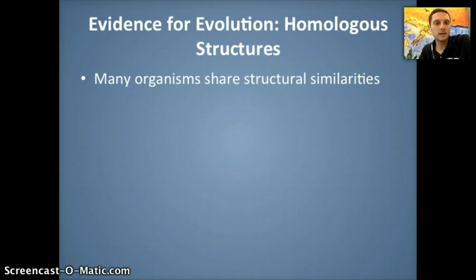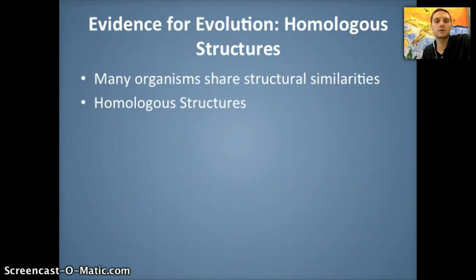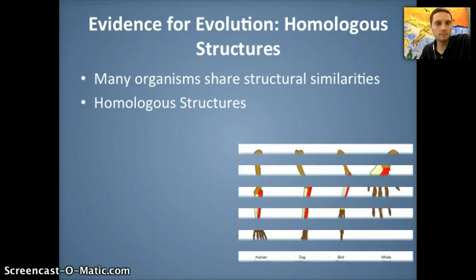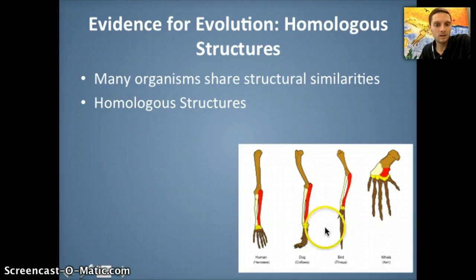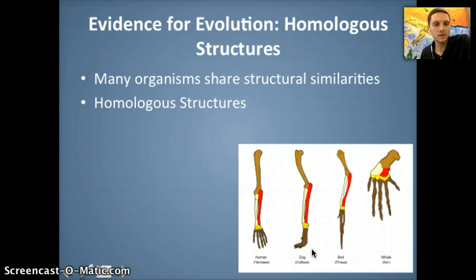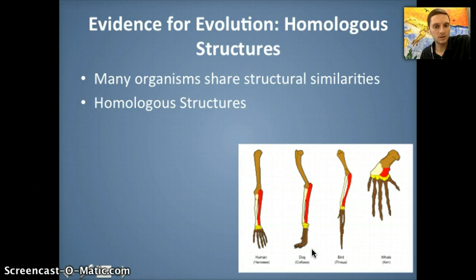A third piece of evidence involves homologous structures. Many organisms share structural similarities. Looking at bone structures of a human, dog, bird, and whale, the same bones — color-coded here — are present in each. Homologous structures are similar in structure, position, and development because they are due to a common ancestor. All of these species, at one point or another, share a common ancestor, even though the structures may not serve the same function.